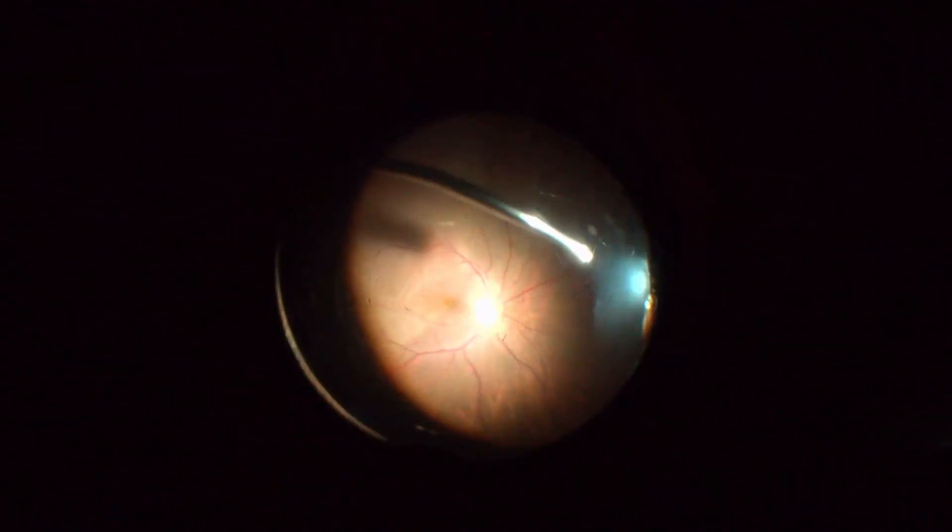Triamcinolone acetonide assisted vitrectomy is always helpful for recognizing the remaining vitreous islands. Fluid against fluid exchange across the breaks allows the surgeon to settle back partially the detached retina.